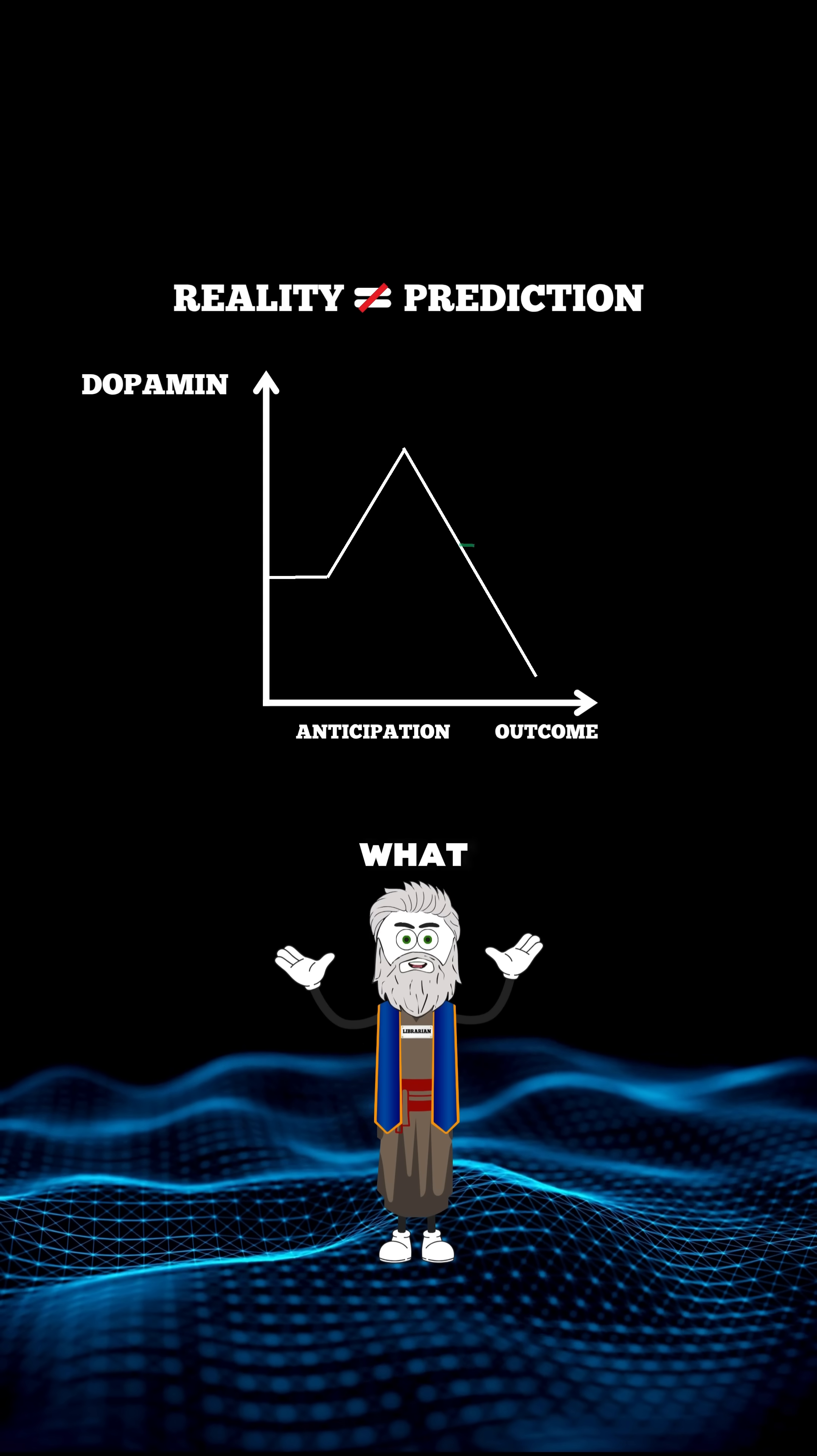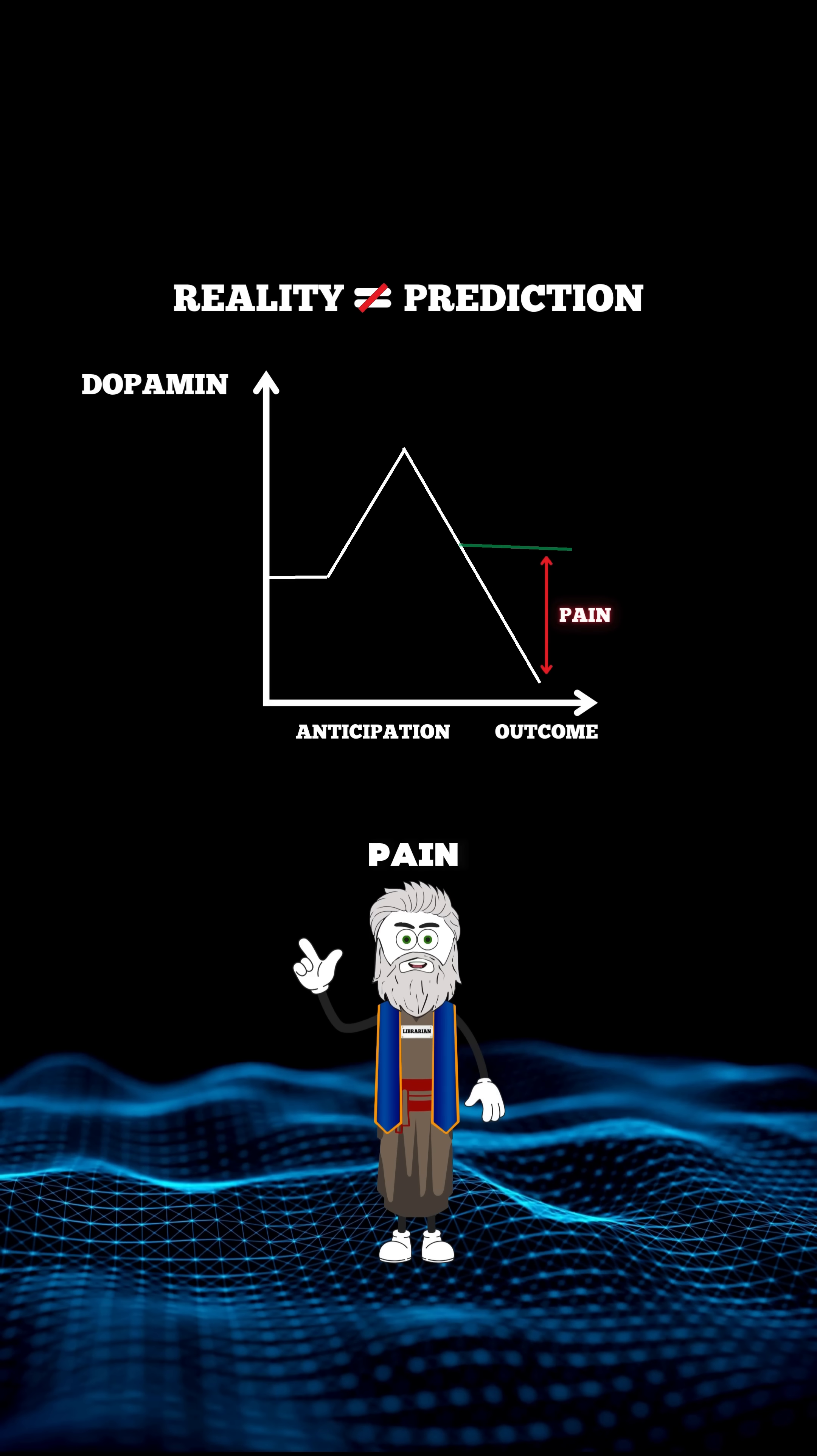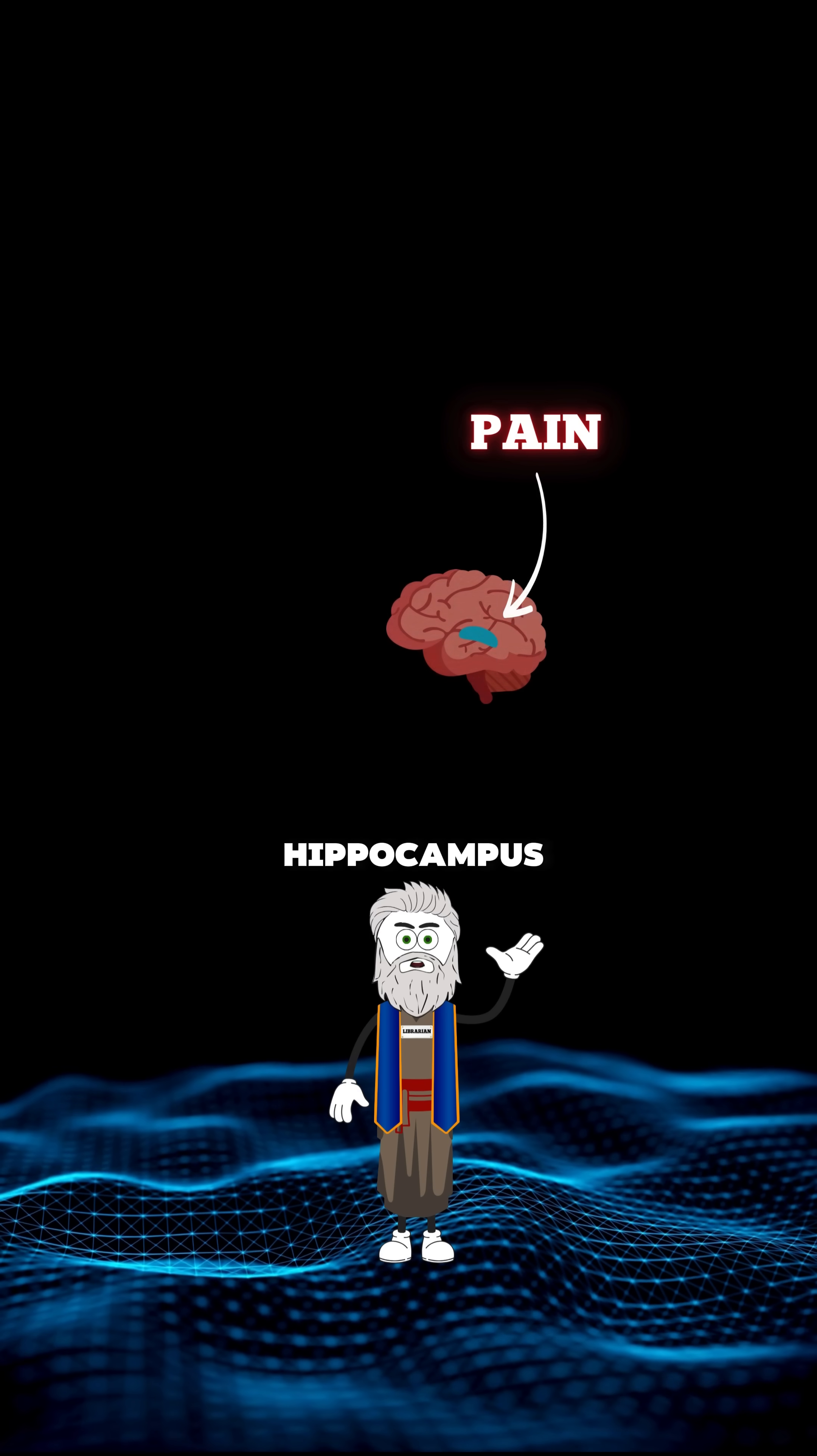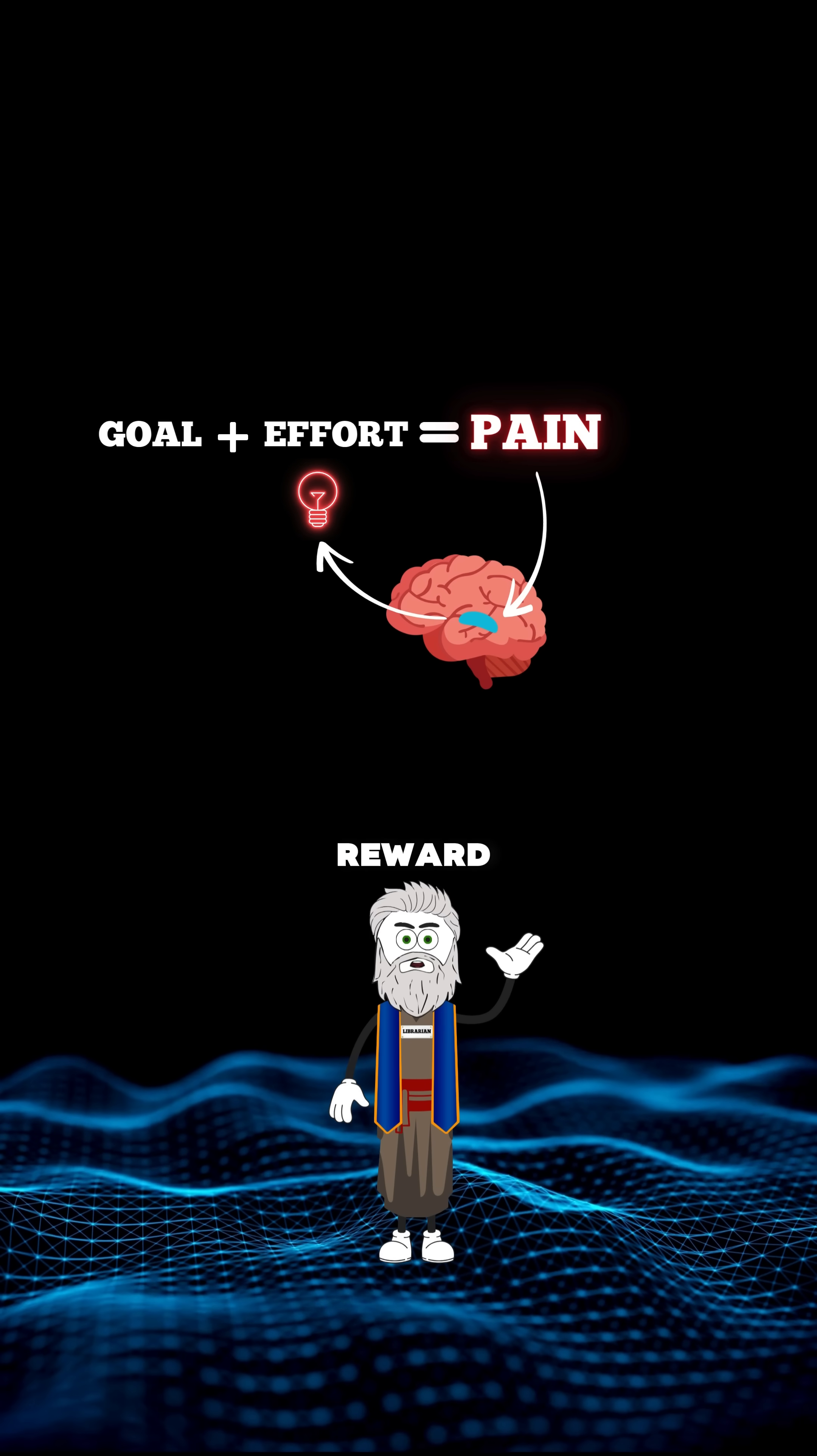And that gap between what we expect and what actually happens is what we experience as pain. And because this pain is so intense, the hippocampus stores it as a memory. Your goal and the effort caused pain instead of a reward.